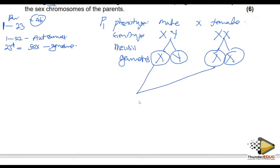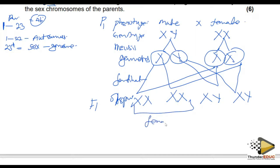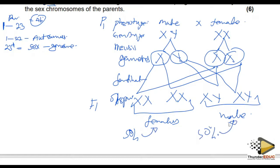Meiosis produces gametes X and Y from the male, and X and X from the female. Fertilization occurs, giving offspring: XX, XX, XY, and XY. The XX individuals are females and the XY individuals are males. This means there is a 50% chance of producing females and a 50% chance of producing males.